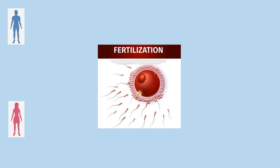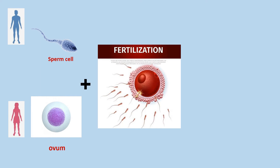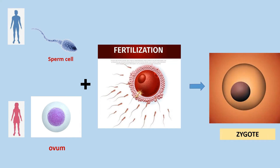Normally the father produces a sperm cell and the mother produces an ovum. These fuse together in the process of fertilization and produce a zygote. The zygote further divides and develops into a baby. This is the normal reproduction process. Now we are going to understand sex determination with an example.